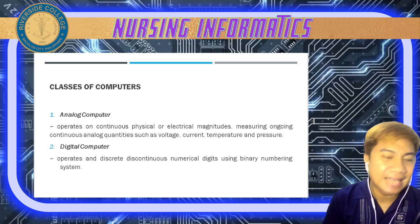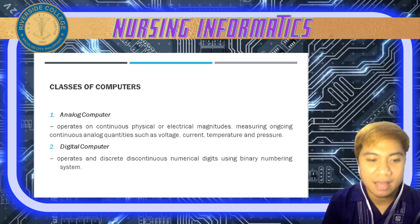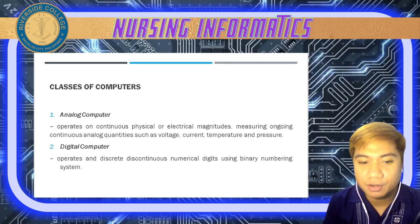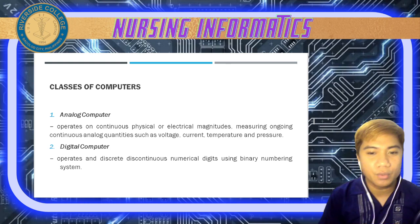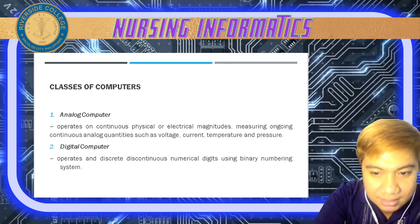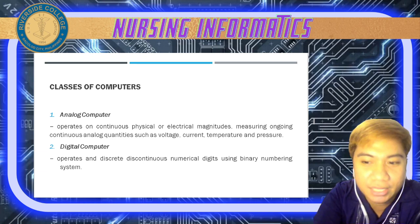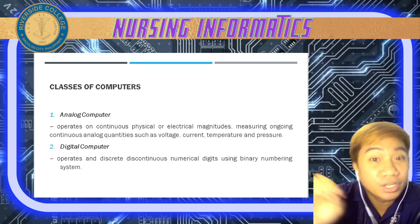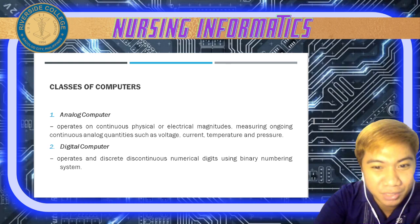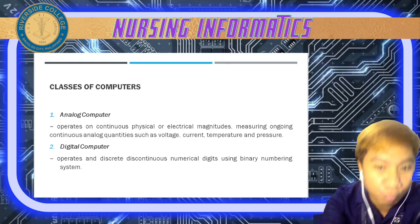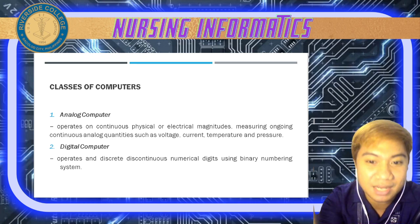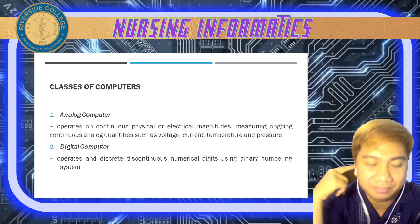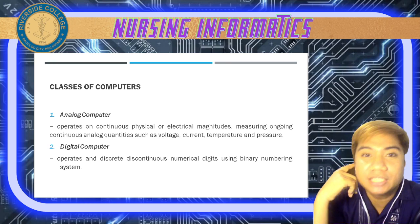Now let's have the different classes of computers. First, the analog computer — it operates on continuous physical or electrical magnitudes, measuring ongoing continuous analog quantities such as voltage, current, temperature, and pressure. Examples of analog computers are physiologic monitoring equipment such as fetal monitors and heart monitors, usually used for monitoring patients.